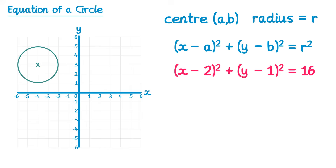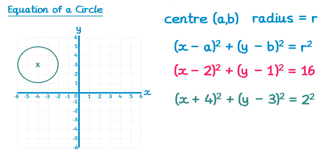What about this circle? This time the x coordinate of the center is negative four, so the opposite sign of negative four is positive four, so we do (x plus 4) all squared. The y coordinate of the center is three, so (y minus 3) all squared, and the radius of this circle is two, so equals two squared which is four.